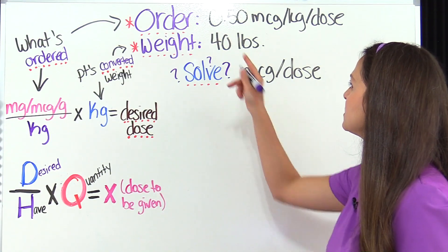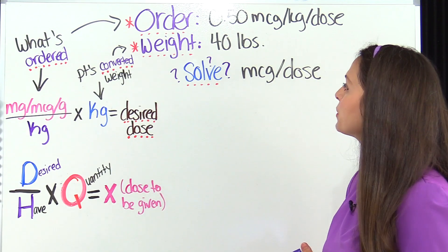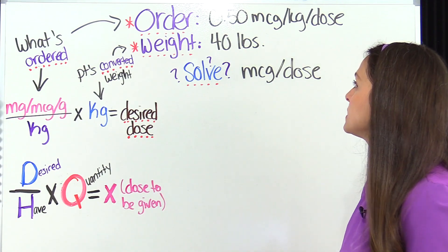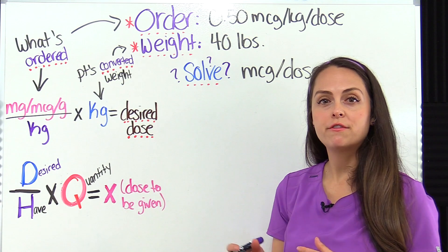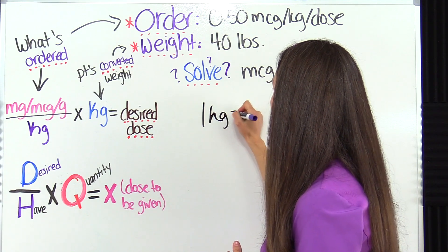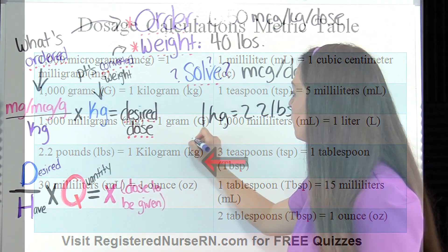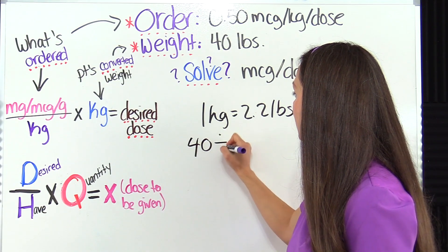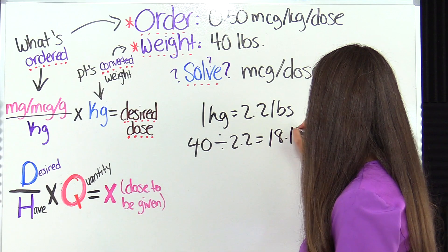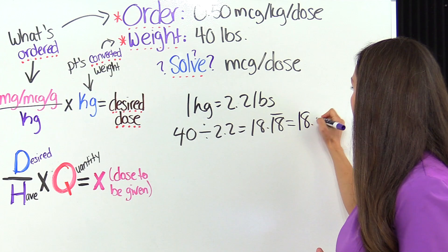This problem says the physician has ordered 0.50 micrograms per kilogram per dose, and the patient weighs 40 pounds. It wants to know how many micrograms per dose this patient should be receiving. So first we convert that weight to kilograms: one kilogram equals 2.2 pounds, so 40 divided by 2.2 gives us 18.18 repeating, which rounds to 18.2 kilograms.